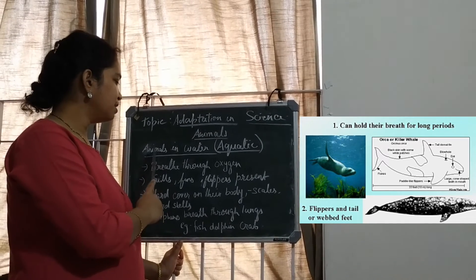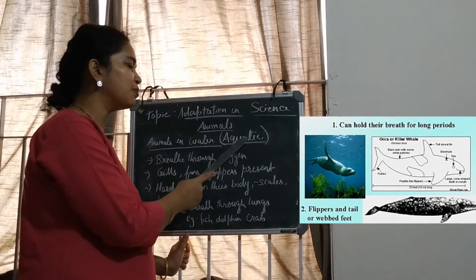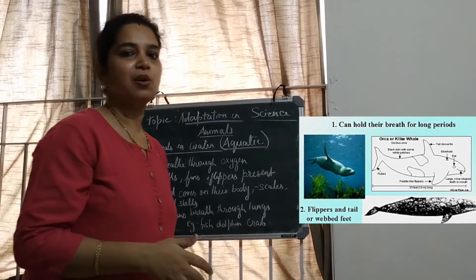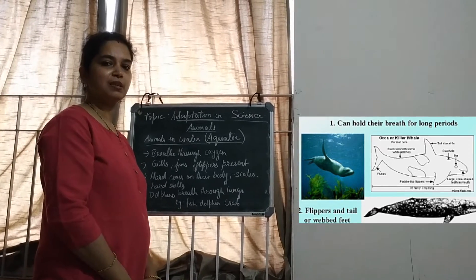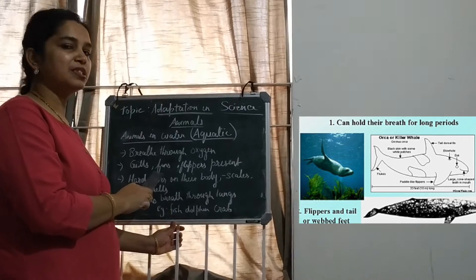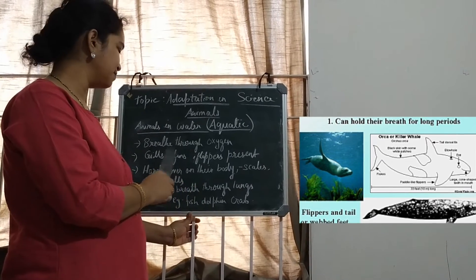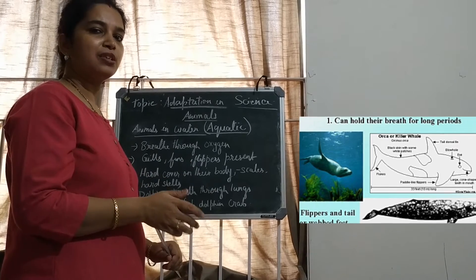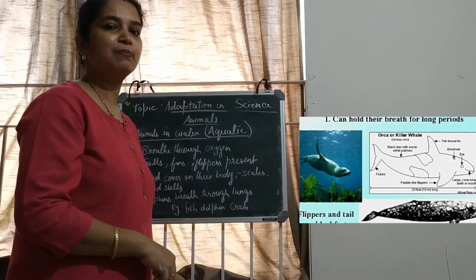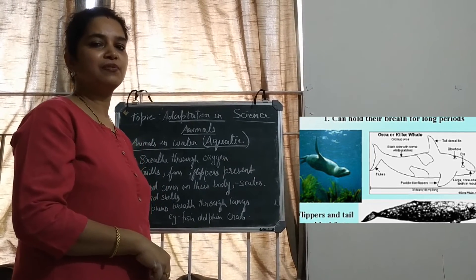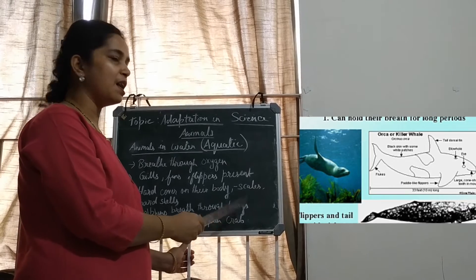Now let's learn about the animals that are found in water. The animals found in water are called aquatic animals — aqua means water. Inside the water, oxygen is dissolved, so they generally breathe through gills. You may have seen the gills present in fishes. Movement inside water is with the help of fins and flippers. Fins are found in fishes and flippers are generally seen in turtles. They have a hard cover to protect their body, such as the scales in fish and the hard shells in crabs. Dolphins and whales breathe with the help of lungs and so they come to the surface of the water to breathe air. This type of adaptation is found in fish, dolphin, crab, whale, and starfish.